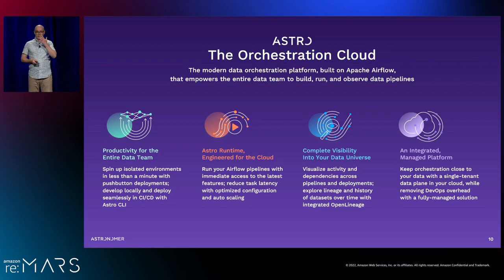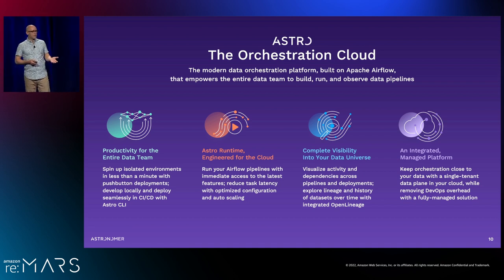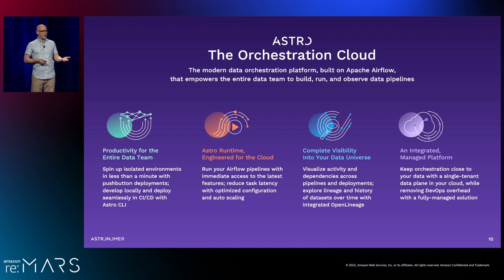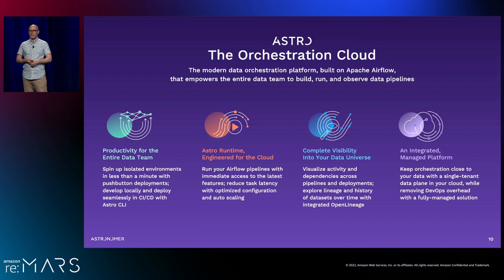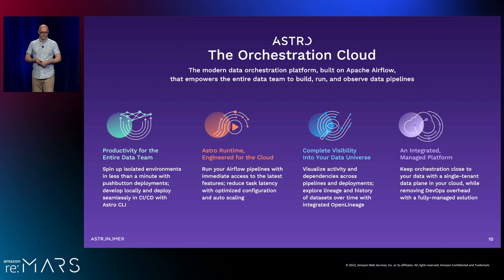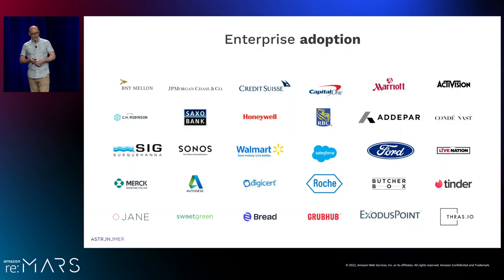Beyond software development around open source and data lineage, we also have a managed service called Astro. Astro runs in the cloud and allows you to deploy your Airflow deployments and jobs in a lights-out way. It's a managed service with a multi-tenant model where different teams can have different deployments, all coordinated with a single visibility layer and lineage built in. We've got great enterprise adoption.